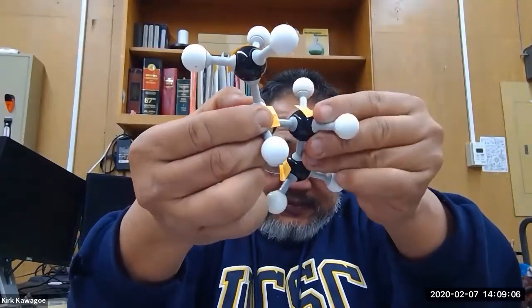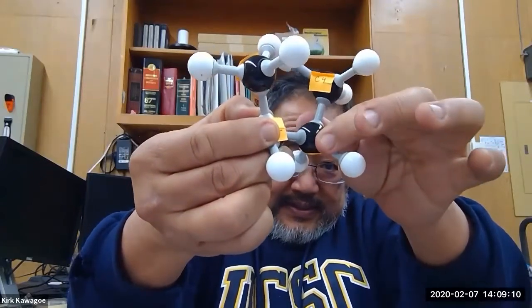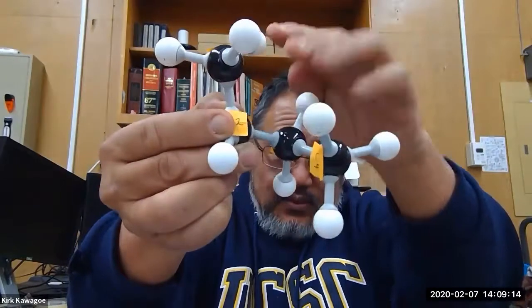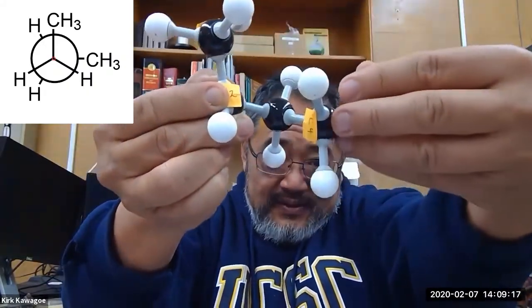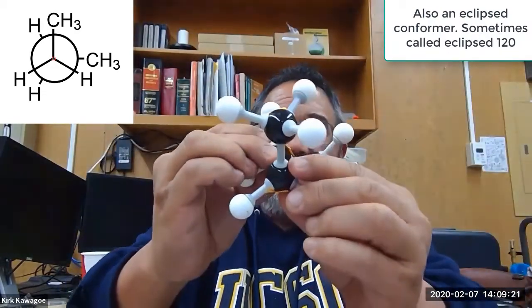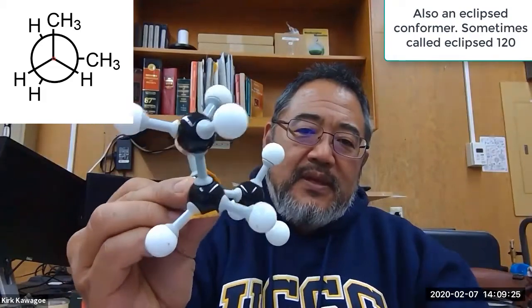And these groups can be far apart or close to each other. This is the highest energy. The next highest energy is that one where this group here, sorry, this group here, right, is close to this hydrogen here. Now if you look at what that is, that's actually this. That's an eclipsed conformer.